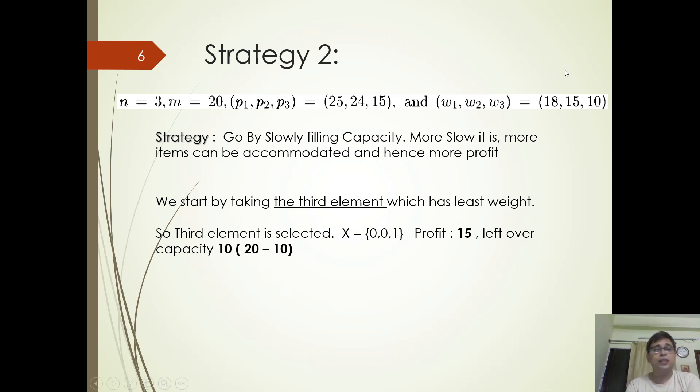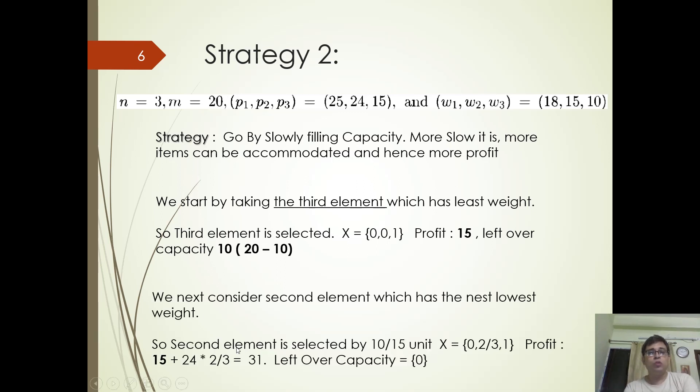The next weight is the second element. I have total weight, with values 10 by 15 and 2 by 13. So in the second case, the value of X is 0.2 by 13. The value is 24.3 by 13. This is the left-over capacity.